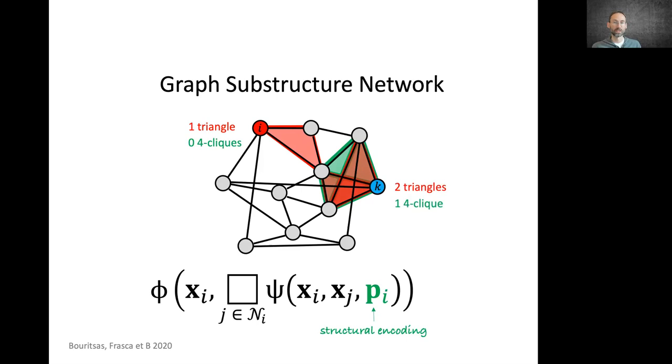There are ways of positional encoding for general graphs as well. One way of incorporating this information was shown in a paper that we recently did with Giorgos Bouritsas and Fabrizio Frasca, my PhD students, where we counted small graph structures such as triangles or cliques, and this way provided a kind of structural encoding that allows to adapt the message passing mechanism to different neighborhoods. We call this architecture graph substructure network. It can be made strictly more powerful than the Weisfeiler-Leman test by appropriate choice of these substructures.